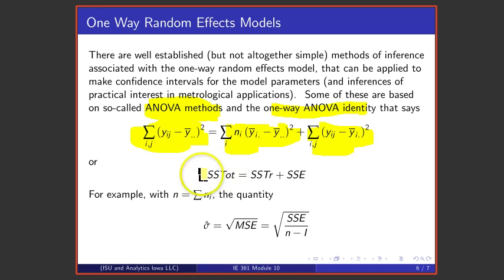This is sometimes written as a total sum of squares is a treatment sum of squares plus an error sum of squares. This is material that is seen in the last week of STAT 231. So those of you that are taking IE 361 have seen this material.